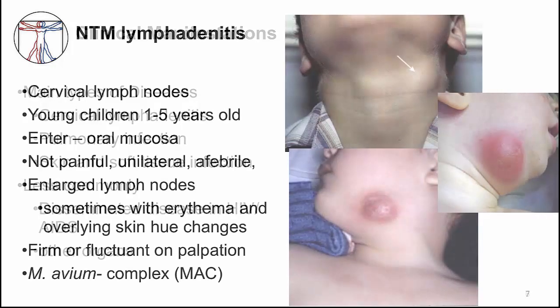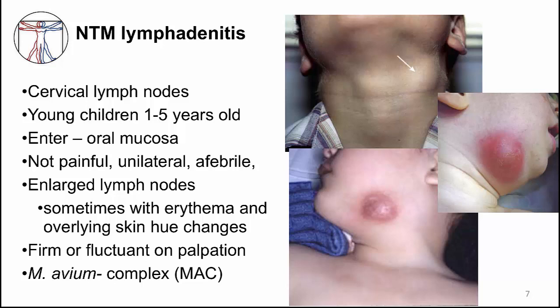NTM commonly infects the cervical lymph nodes and is especially seen in young children one to five years of age. Entry of NTM is through the oral mucosa and then to local lymph nodes. The infected nodes tend to be unilateral in distribution, not painful, and the child typically does not have a fever. The node enlarges slowly and sometimes color changes to the overlying skin can be seen — a slight redness or violet hue, as you can see in the photos. On palpation they can be fluctuant but typically are firm. Mycobacterium avium complex, or MAC, is the most common causative NTM for lymphadenitis.